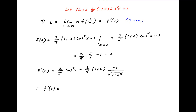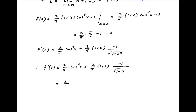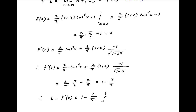Therefore, the value of f dash 0 is equal to 2 upon pi times cos inverse 0 plus 2 upon pi times 1 plus 0 times minus 1 upon root of 1 minus 0. This simplifies to 2 upon pi times pi upon 2 minus 2 upon pi, and therefore the value of f dash 0 is equal to 1 minus 2 upon pi. Therefore, the value of the limit L, which equals f dash 0, is equal to 1 minus 2 upon pi, which is the required answer.